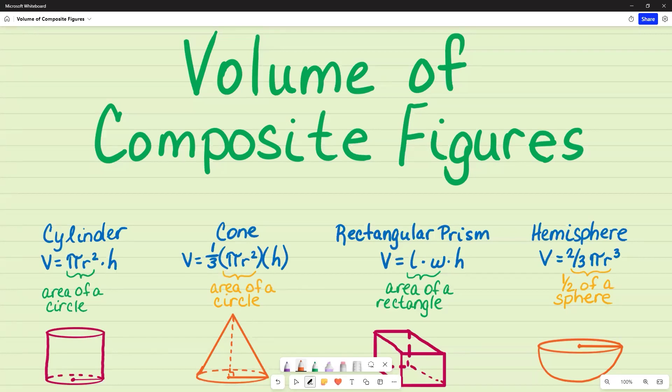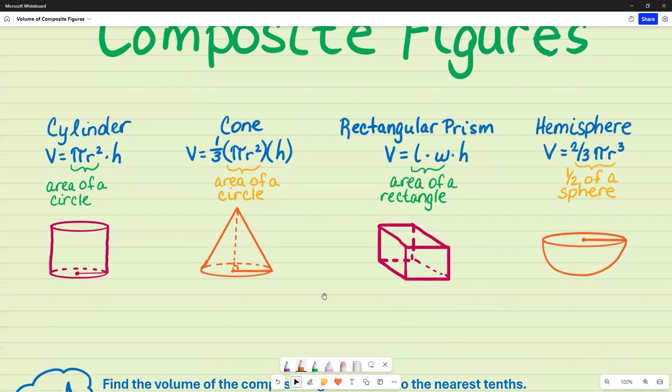Welcome to Mimi's Math Channel. Today, I will find the volume of a composite figure using the cylinder, cone, rectangular prism, and hemisphere formulas. So this is what they look like.